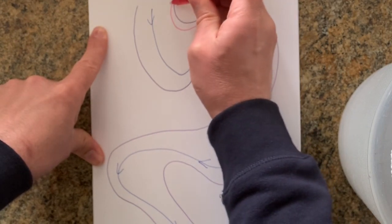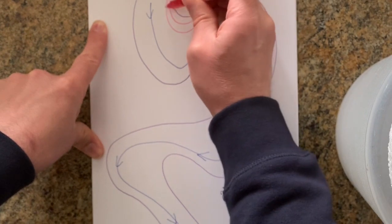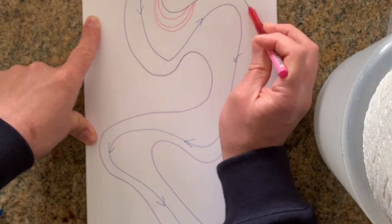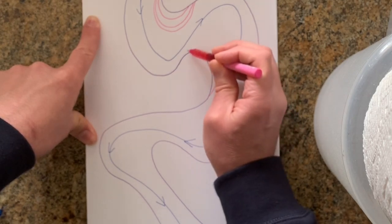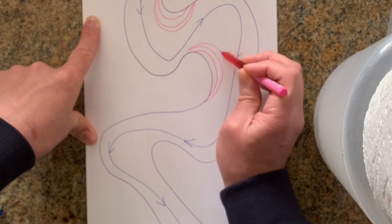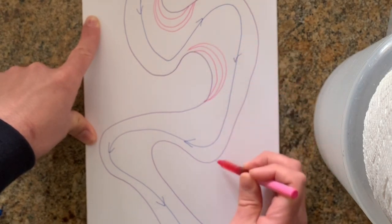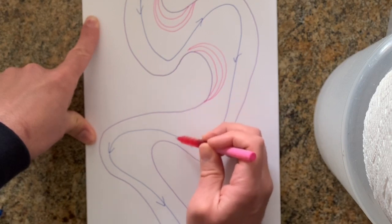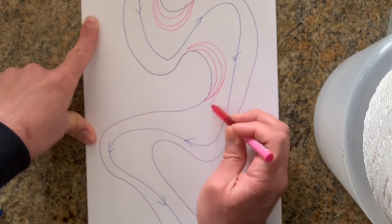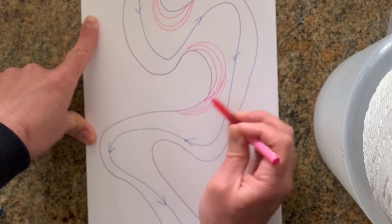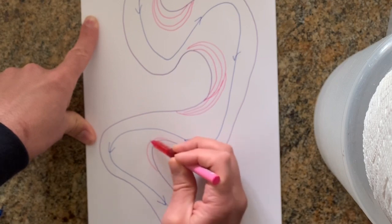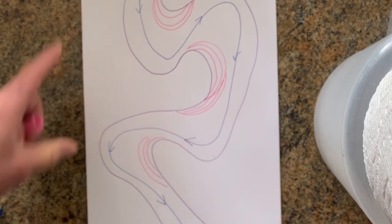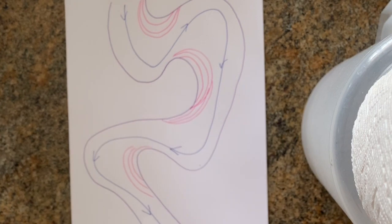As the water slows down on the inside of the bend, it starts to deposit river sediment. Erosion happens on the outside, but on the inside where water is slower, you have deposition — the creation of a point bar. So deposition happens on the inside corner, and as erosion continues on the outside, land grows on the inside.